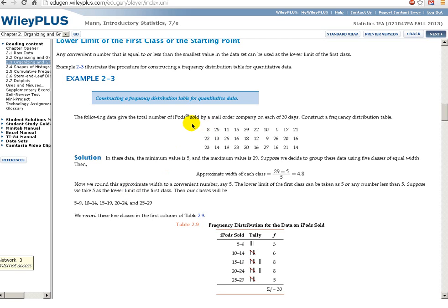Okay, we're going to go to the next section, but let's just review the data because we're going to be referring to this data. The following data give the total number of iPods sold by a mail order company on each of 30 days. So on the first day they sold 8, the next day they sold 25, the next day they sold 11, and so on.